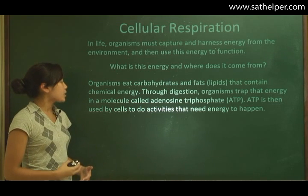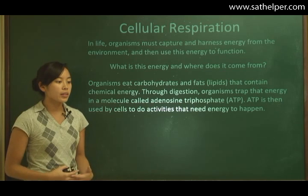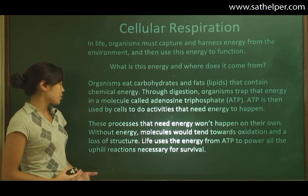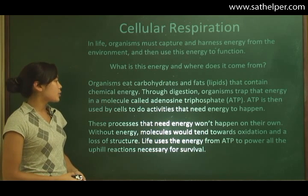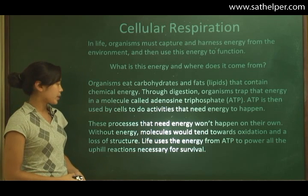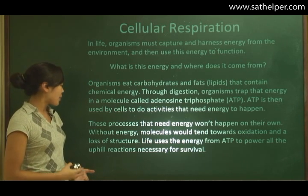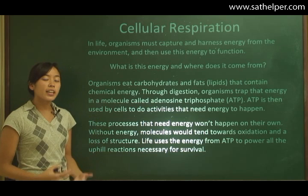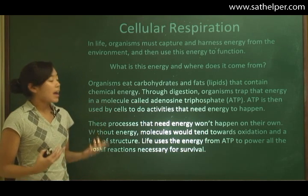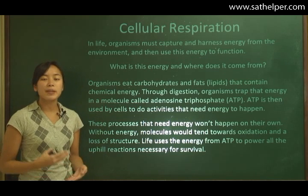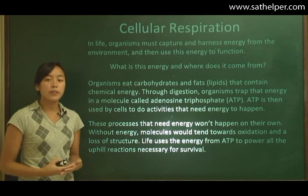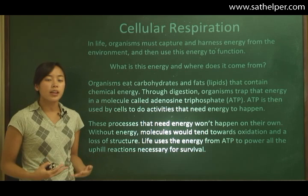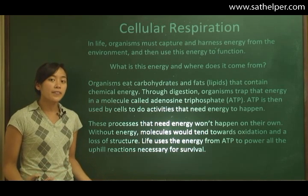ATP is then used by cells to do activities that need energy to happen. These processes that need energy won't happen on their own. Without energy, molecules would tend towards oxidation and a loss of structure. Life uses the energy from ATP to power all the uphill reactions necessary for survival. Cellular respiration is basically the capture and the transfer of energy from food to ATP, and then we use this ATP to fuel the cell's chemical processes so that life can happen.